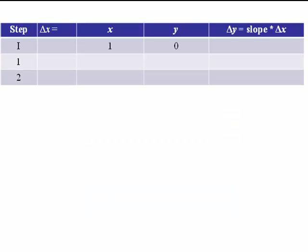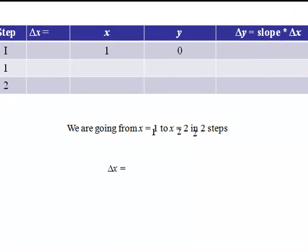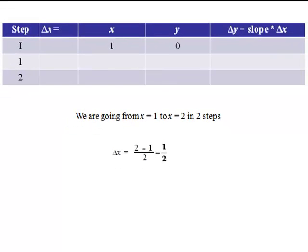Then the first thing we do is we put in our initial condition, which said that when x is 1, y is equal to 0. And the next step is to calculate what our delta x will be. Well, we're going from 1 to 2 in two steps, so our delta x is 1 half, or 0.5.